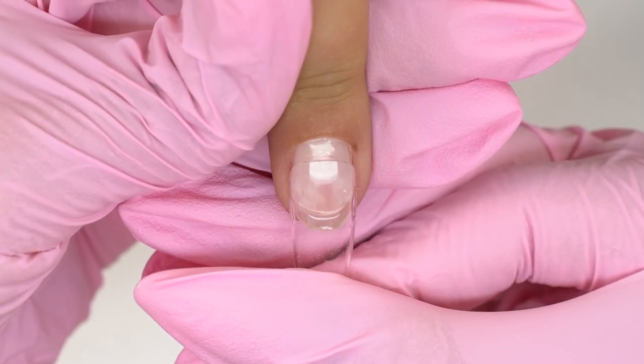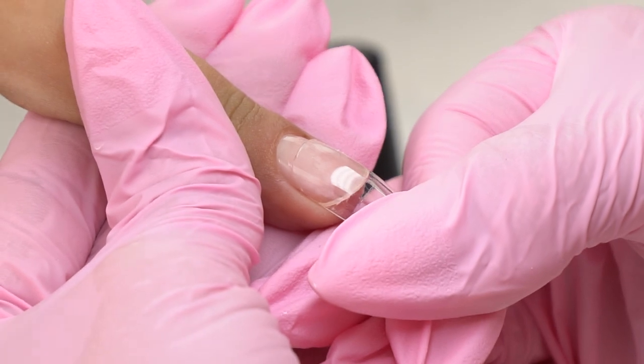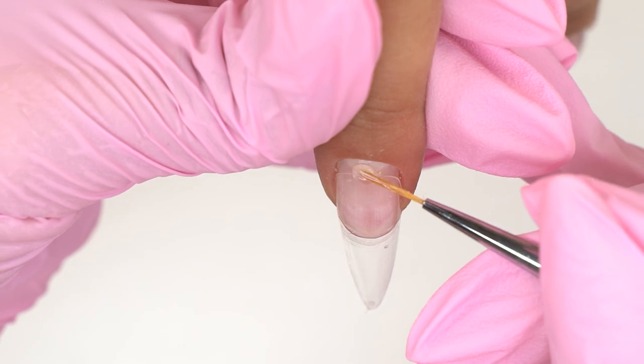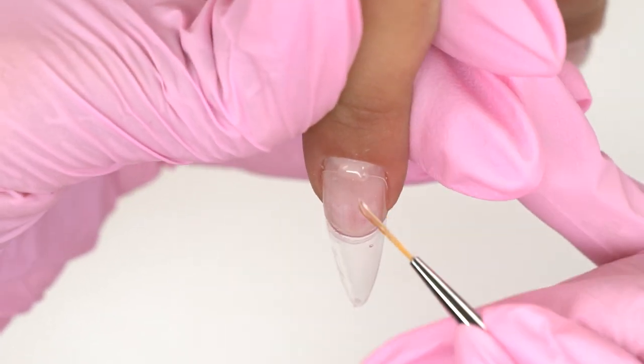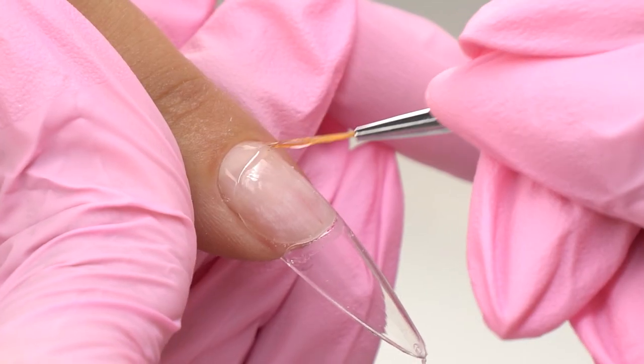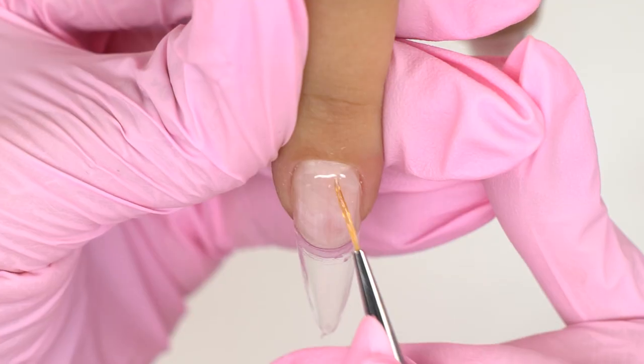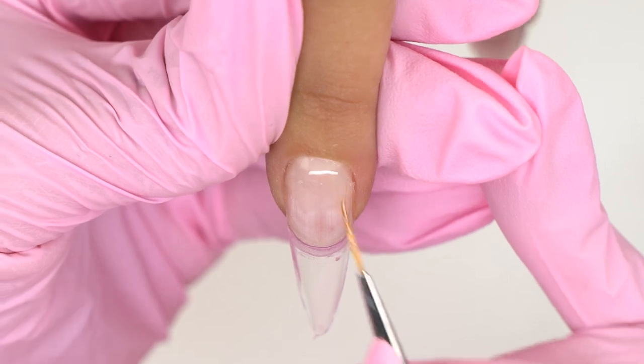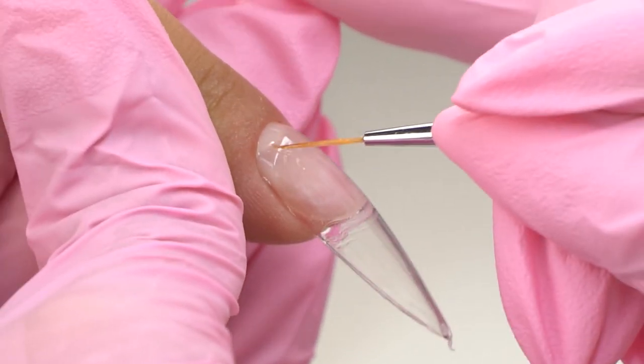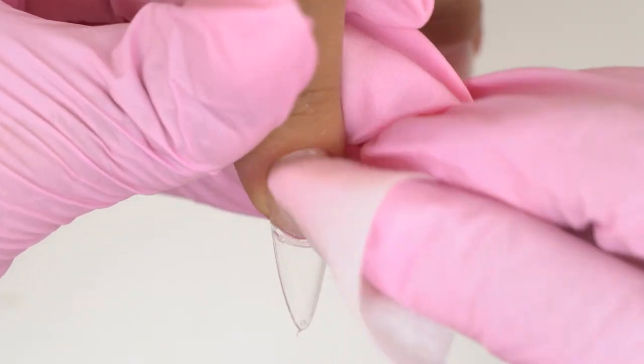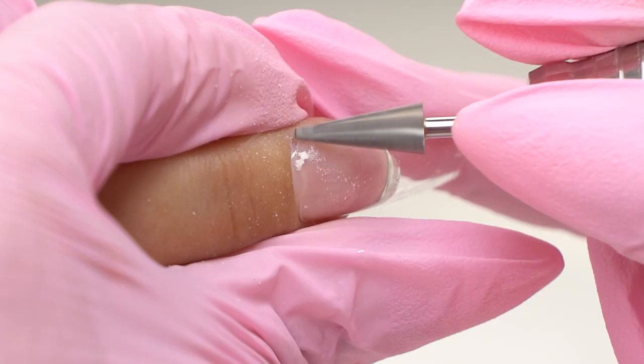Last time I set up the tip super close to the cuticle and there still was a tiny gap there. This time I take a step back and fill in this area with the base coat to smooth out the transition. We can also file this area. So it's great that there is a base coat. Use the same purple drill bit.